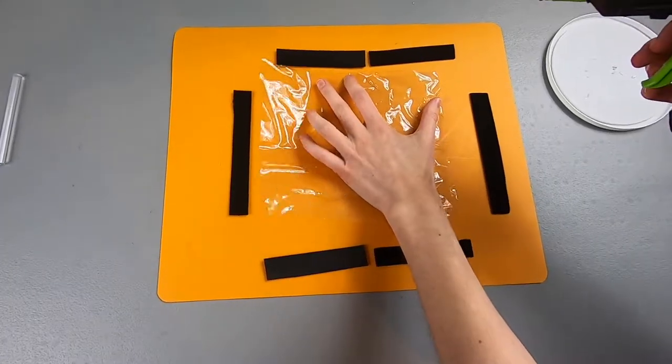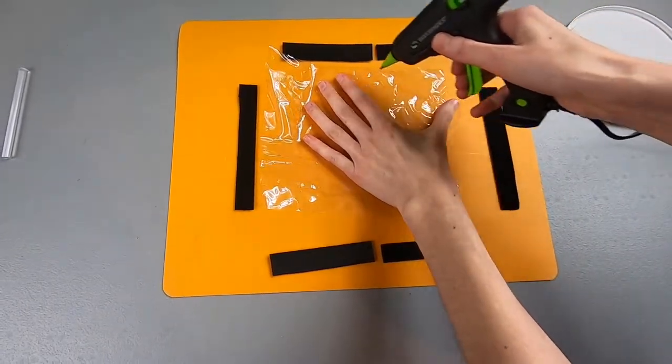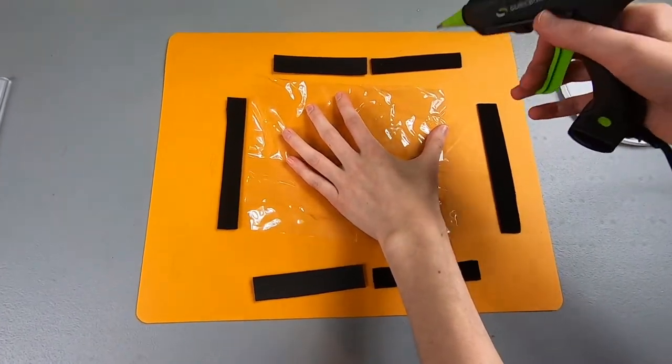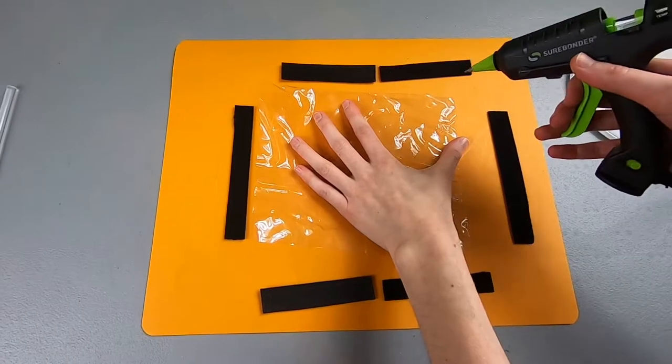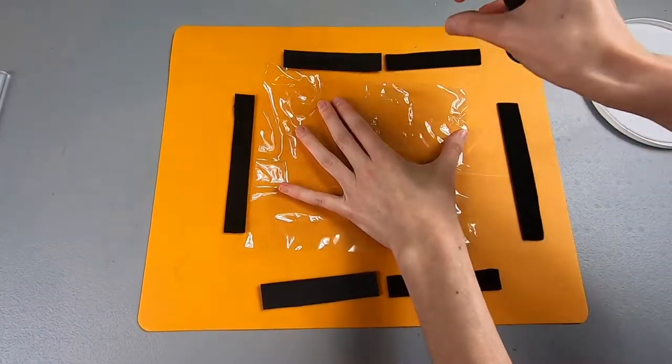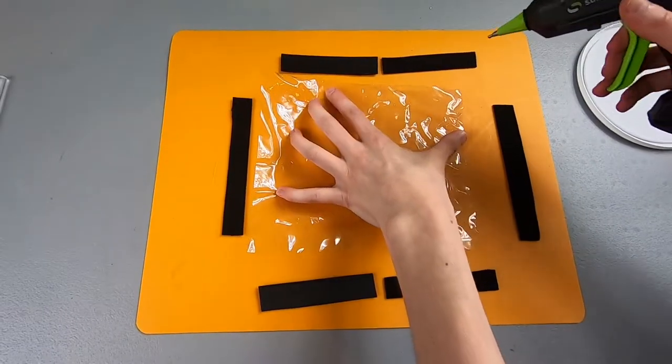We found what works best is if you just do long runs of the hot glue, back and forth. You want to make sure you get enough coverage, and then we're gonna work quickly because the hot glue will cool pretty fast. So we're just gonna do some long strips of the hot glue and then quickly press our velcro onto it.